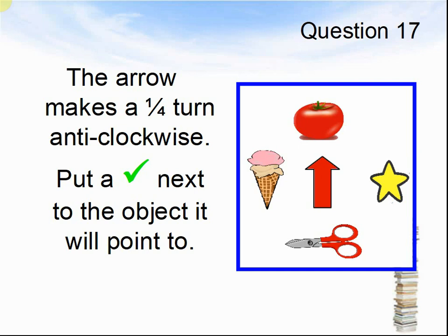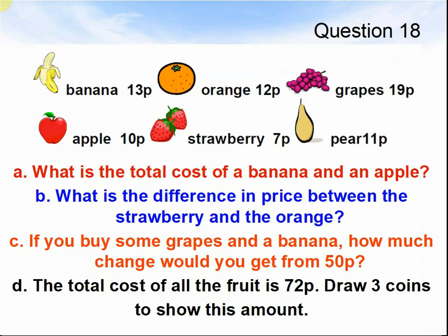Here comes question 18. Bananas are 13 pence, an orange is 12 pence, grapes are 19 pence, an apple is 10 pence, a strawberry is 7 pence and a pear is 11 pence. A: What is the total cost of a banana and an apple? B: What is the difference in price between the strawberry and the orange? C: If you buy some grapes and a banana, how much change will you get from 50 pence? D: The total cost of all the fruit is 72 pence — draw three coins to show this amount. Pause the video until you are ready for question 19.